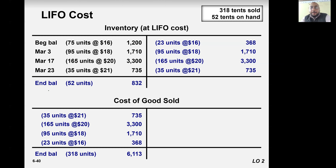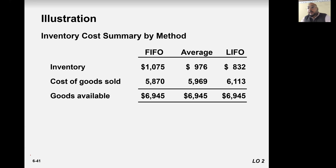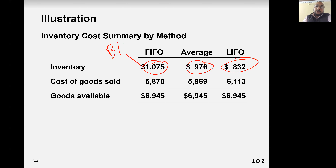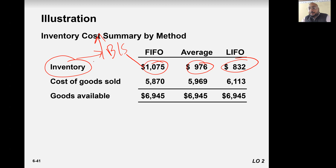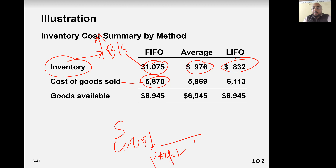Now let's compare and deduce our results. With FIFO — first in, first out — inventory cost is the highest, which means the balance sheet would be highest in FIFO because inventory goes to the balance sheet and the asset side looks bigger. Cost of goods sold is lowest in FIFO. When cost of goods sold is lowest, profit is going to be highest, so when you multiply by the tax rate, tax will be highest.